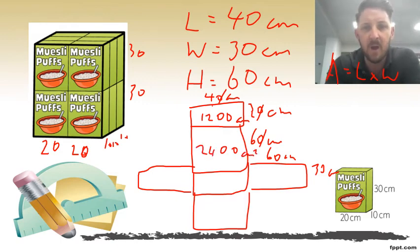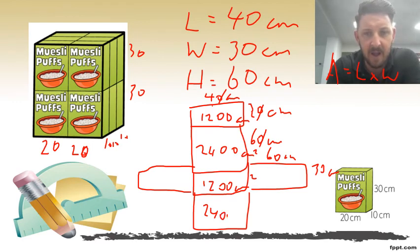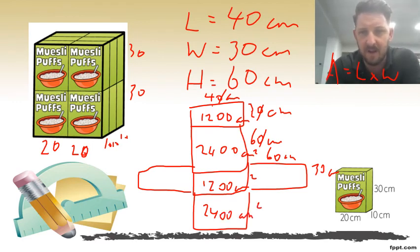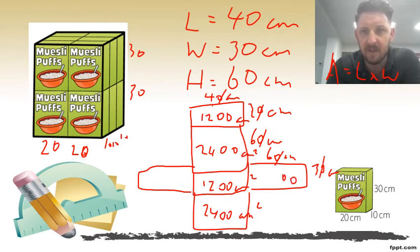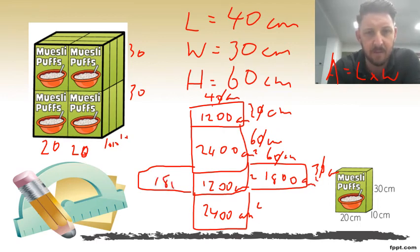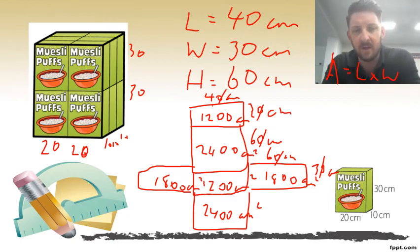The opposite top face is also 1200 centimeters squared, and the opposite front face is also 2400 centimeters squared. For the last side faces, two zeros onto the answer, six times three is 18, so that's 1800 centimeters squared, and the opposite side is also 1800 centimeters squared. Stop the video and add all these up.